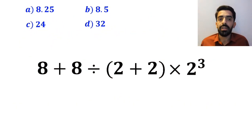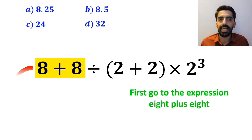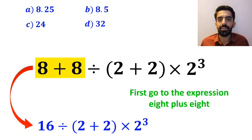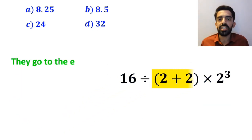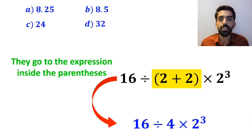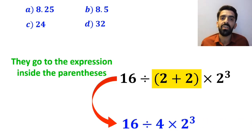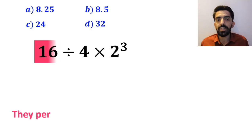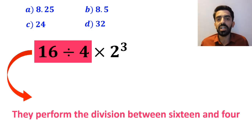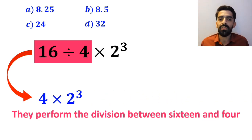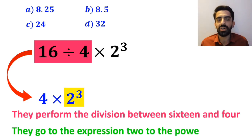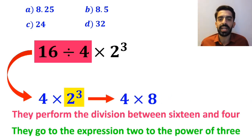Many people, to solve this question, first go to the expression 8 plus 8, and instead write 16 divided by (2 plus 2), then times 2 to the power of 3. In the next step, they simplify the expression inside the parenthesis to get 16 divided by 4 times 2 to the power of 3. Then they perform the division between 16 and 4, writing 4 times 2 to the power of 3. Finally, they evaluate 2 to the power of 3 and simplify to 4 multiplied by 8, which gives them the answer 32.